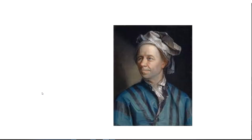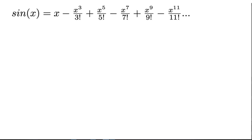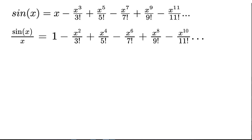It was not until 1736 when Leonard Euler solved the problem, giving him instant fame and recognition in the math community. Let's solve this problem the way that Euler did. Firstly, let's start with the Maclaurin series for sine of x. Then, for reasons that will become apparent later, let's divide both sides by x.